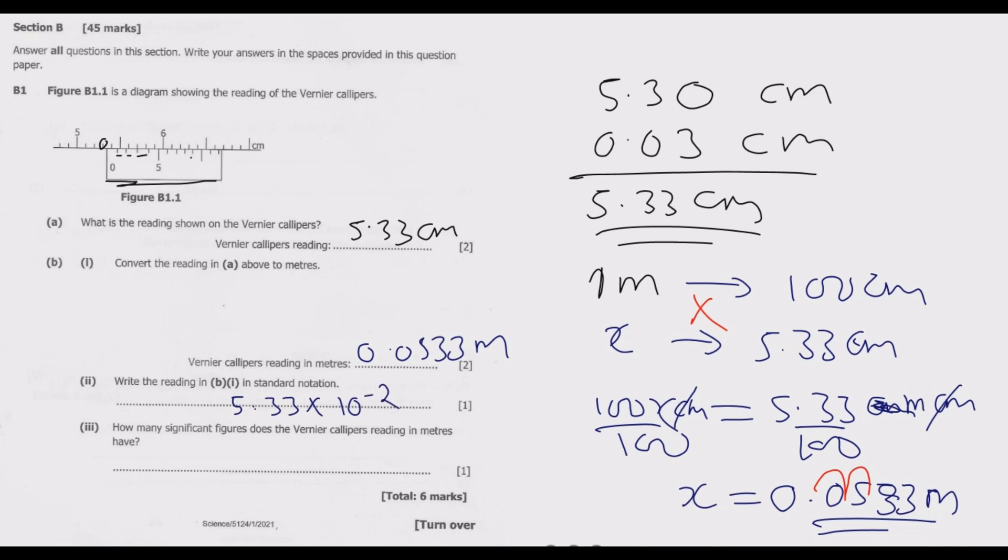How many significant figures does the vernier caliper reading in meters have? So remember, the zeros before to the left are not significant figures.